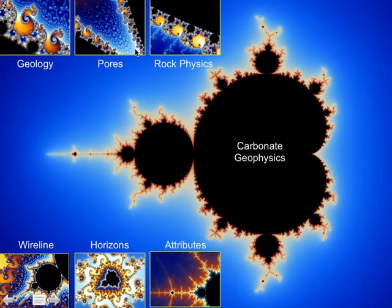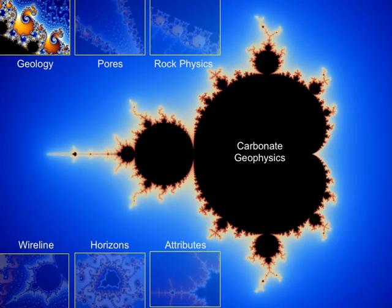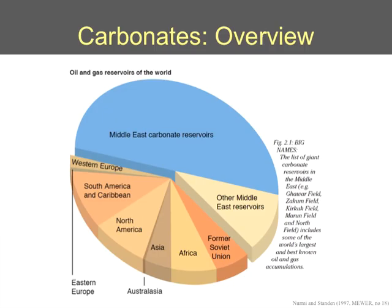This very colorful diagram is my way to get across the thought that carbonates are very complex. This is the Mandelbrot set, and in various aspects of the subject — like geology, pores, and rock physics — there is complexity at those levels. But when you put the whole thing together, it does start to make a coherent picture. This is my cartoon to get that across.